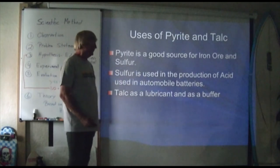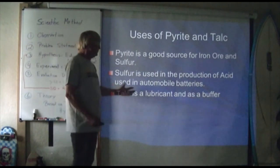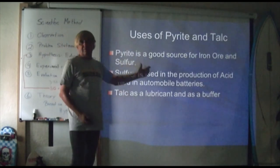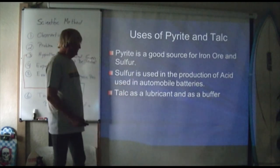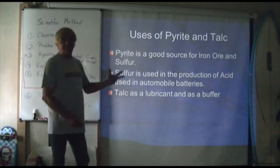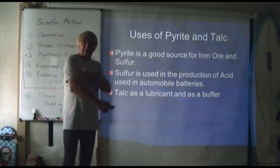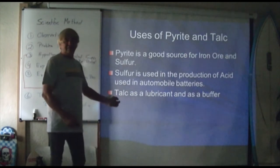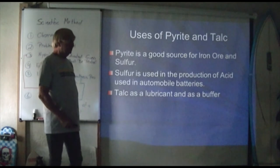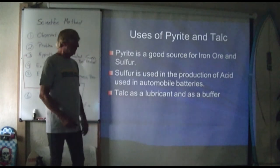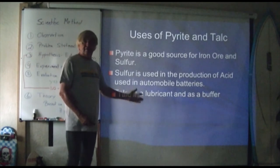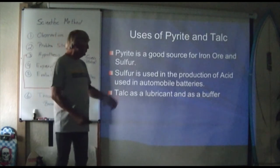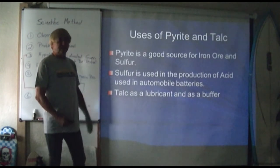Pyrite is a good source of iron ore, and sulfur is used in the production of acids. We can use the iron for ore and the sulfur to produce acids. Talc is used as a lubricant and as a buffer. It used to be used in powder people put on their bodies, but because of the complex chemistry of talc it actually causes ovarian cancer in females. Companies that used talc to produce body powder are now being sued because of what it does to our bodies.